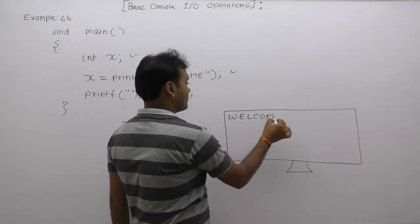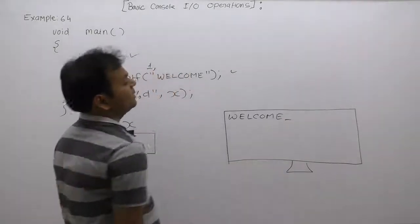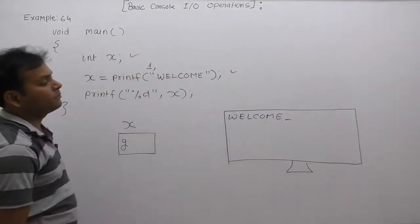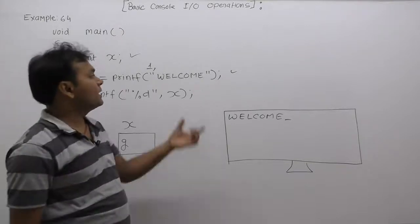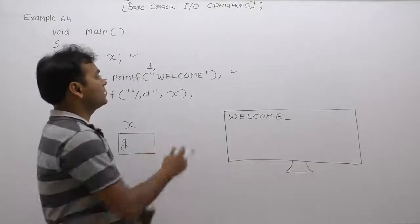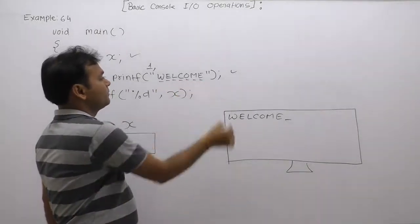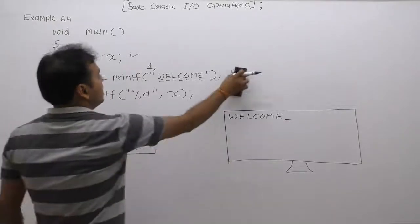After printing the message, the cursor will be available after it. Next, printf will return the number of supplied characters inside the format string. The format string contains seven characters: one, two, three, four, five, six, seven. Therefore, finally it will return seven.